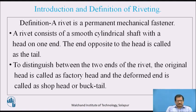The definition of riveting: a rivet is a permanent mechanical fastener. A rivet consists of a smooth cylindrical shaft with a head on one end. The end opposite to the head is called the tail. To distinguish between the two ends of the rivet, the original head is called the factory head, and the deformed end is called the shop head or buck tail.